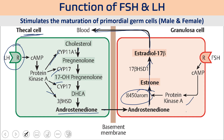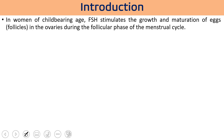In women of child-bearing age, FSH stimulates growth of mature follicles. The menstrual cycle is a very complex process requiring the hypothalamus, anterior pituitary, ovary, and growing Graafian follicle. It is regulated through the hypothalamo-pituitary-ovarian axis. The hypothalamic hormone GnRH regulates pituitary gonadotropins FSH and LH, which in turn regulate ovarian hormones estrogen and progesterone — all working together to regulate the menstrual cycle.